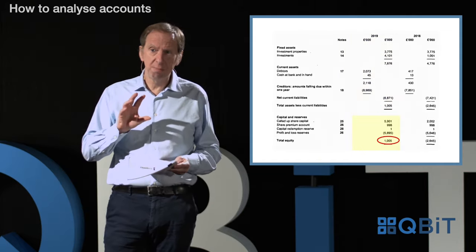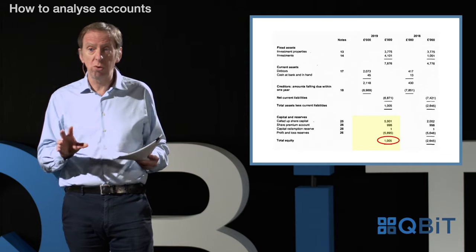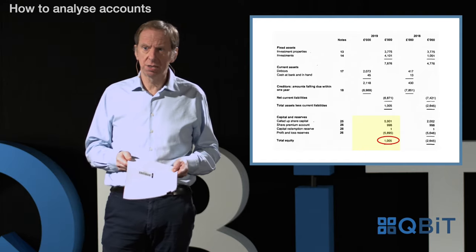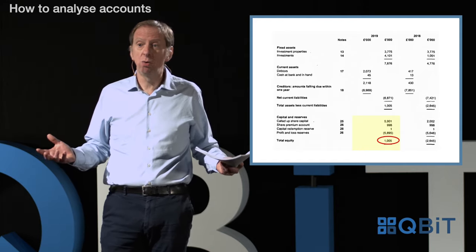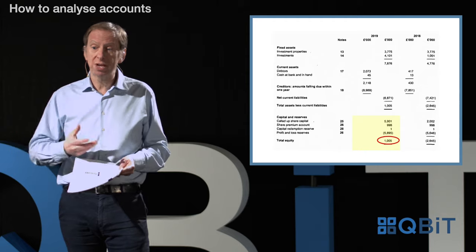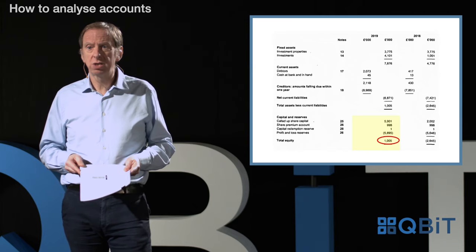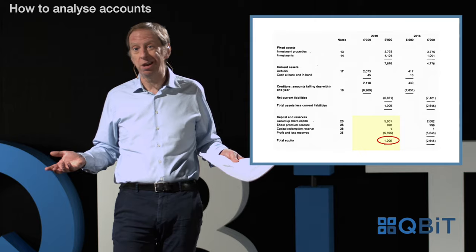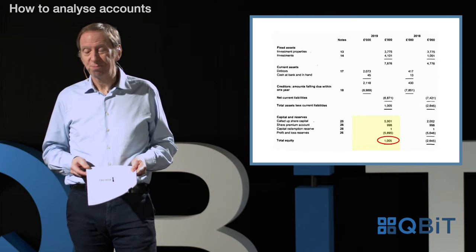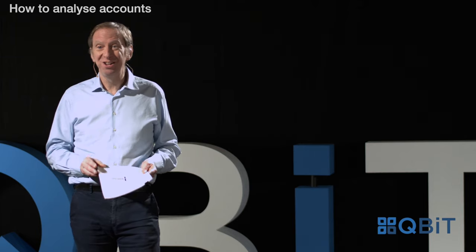The third part of the balance sheet is at the bottom, headed up capital and reserves. The two most important lines in the capital and reserves section are the share capital and the profit and loss account. The share capital is what the shareholders brought into the business on day one. The profit and loss account tells us what's happened since day one. If we add up those sections at the bottom, we come to a total of £1,005 — the same as the net assets figure, which is not a coincidence.